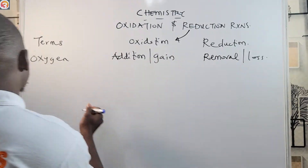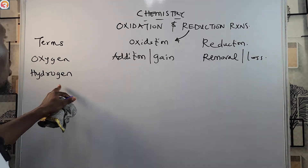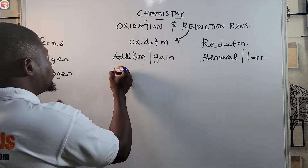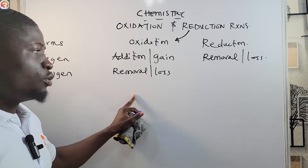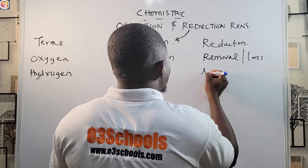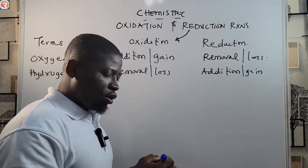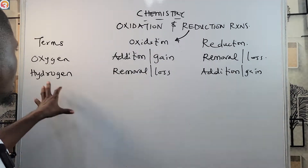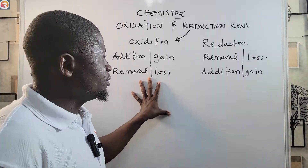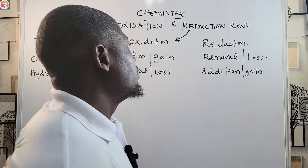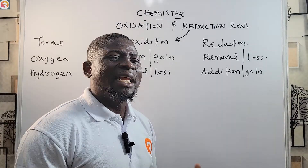So, in terms of oxygen: oxidation is the addition or gain of oxygen, and reduction is the removal or loss of oxygen. Also in terms of hydrogen: oxidation is the removal or loss of hydrogen, while reduction is the addition or gain of hydrogen.